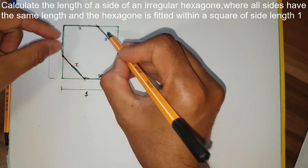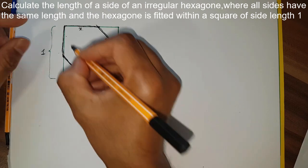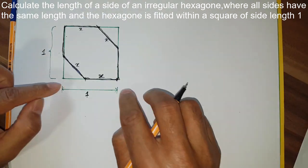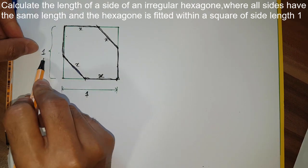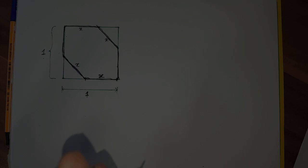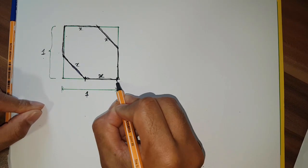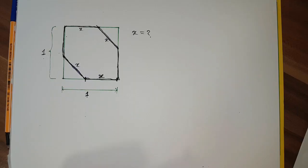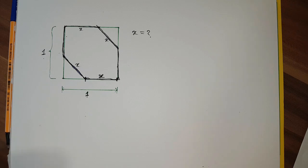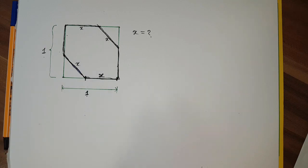This irregular hexagon is fitted within a square having a side length of one - from here to here equals one, and here to here also equals one. This problem says we have to find out the value of this hexagonal side length, meaning what is the value of X. This seems complex but it has a simple solution - stay with me and see how simply I can solve this.